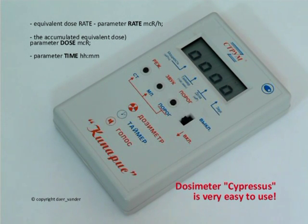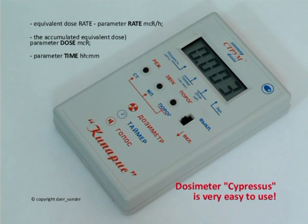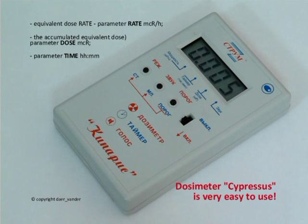The first is the equivalent dose rate, parameter Rate. The second is the accumulated equivalent dose, parameter Dose. The third is the time elapsed from the moment the device is switched on, parameter Time.